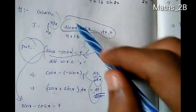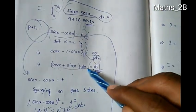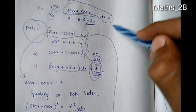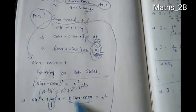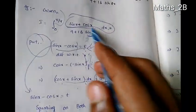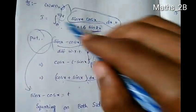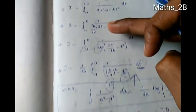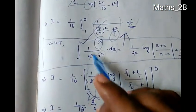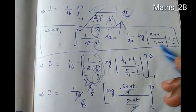To summarize: we used the substitution sin x - cos x = t, differentiated to get (cos x + sin x)·dx = dt, squared to find sin 2x = 1 - t², changed limits to -1 and 0, and applied the formula ∫ 1/(a² - x²) dx = 1/(2a)·log|(a + x)/(a - x)| + C to evaluate the integral and prove the result.